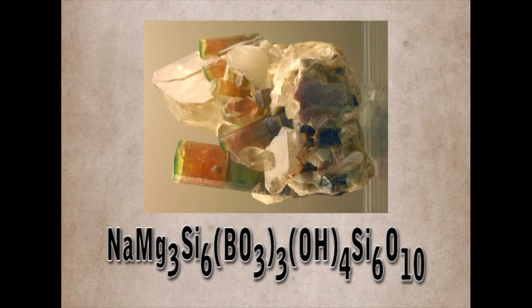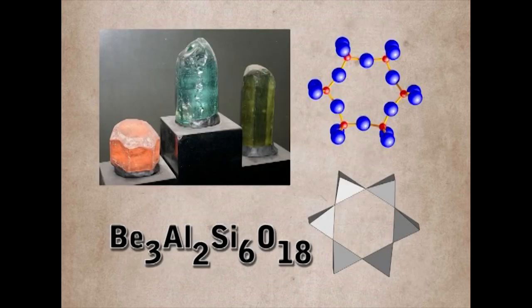Six-member rings are the most common. Examples include tourmaline (6-membered ring): NaMg3Si6B3O3(OH)4 Si6O10; and beryl (6-membered ring): Be3Al2Si6O18.